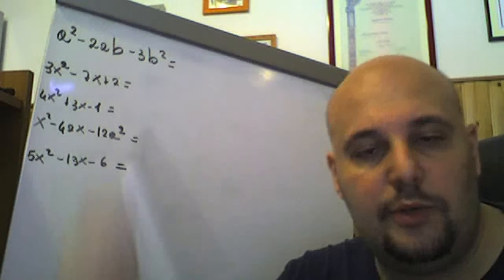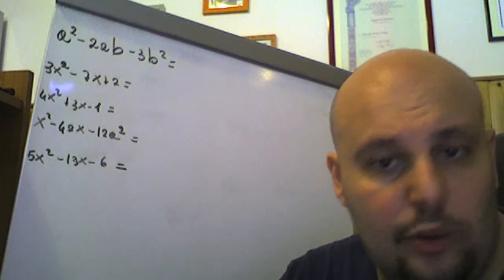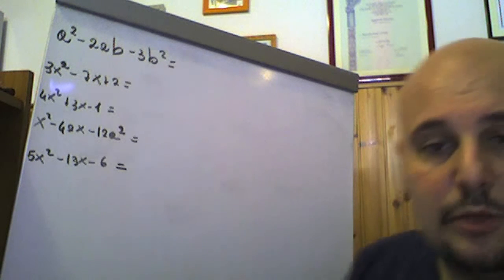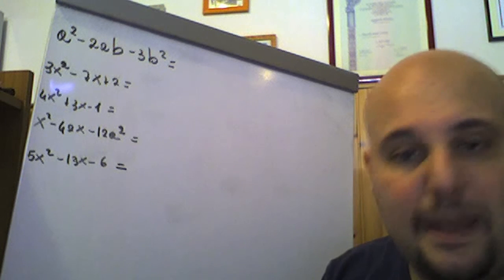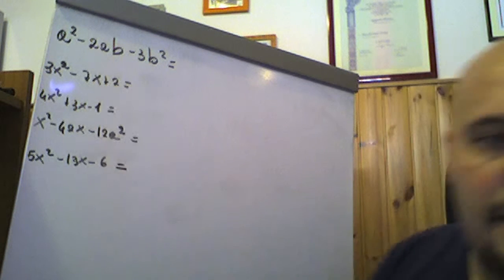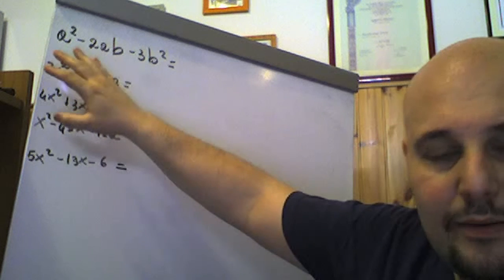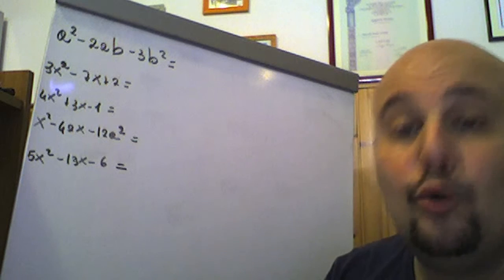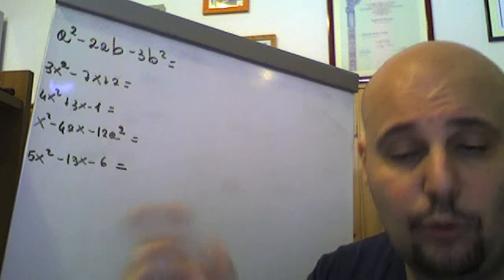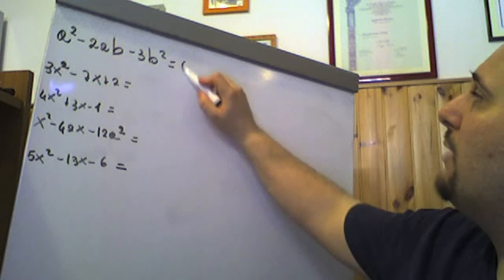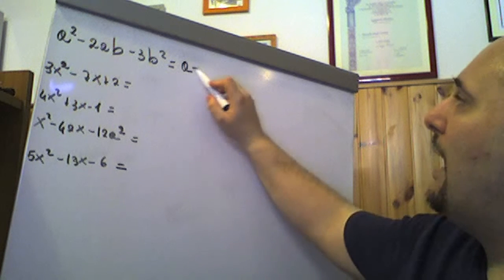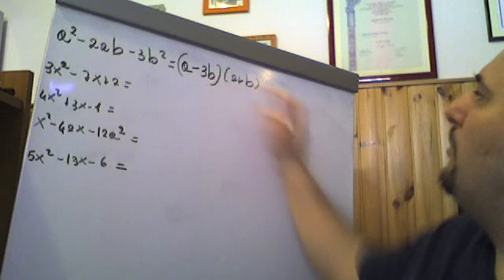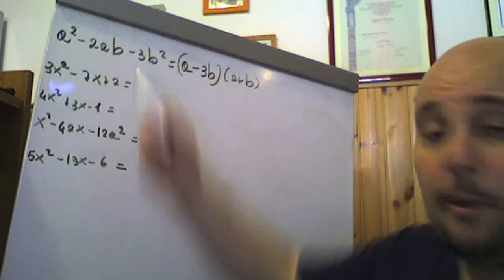A² − 2ab − 3b²: anche qui parliamo di un trinomio notevole a coefficienti letterali. −3b² = (−3b)(+b) e −3b + b = −2b. Quindi questo è (a − 3b)(a + b). Ricordiamo che questo trinomio di secondo grado nella variabile a si legge: a² − 2b·a − 3b², dove −2b è il coefficiente davanti ad a e −3b² è il termine noto.